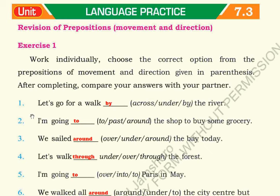Number one: Let's go for a walk by the river - three of us. Let's go for a walk by the river. Number two: I am going to the shop to buy some grocery. ہم grocery خریدنے کے لئے shop جا رہے ہیں - میں نے 'to' چنا۔